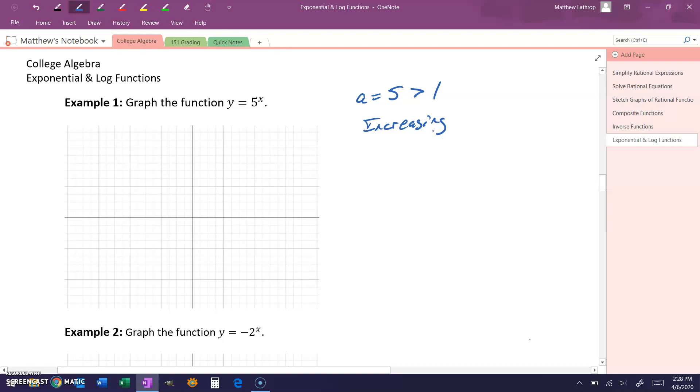In this case, we have no transformations that are being applied, which tells us that we know our graph will pass through the point (0,1), (1,5), and (-1, 1/5). And we also know that we have a horizontal asymptote represented by y equals 0.